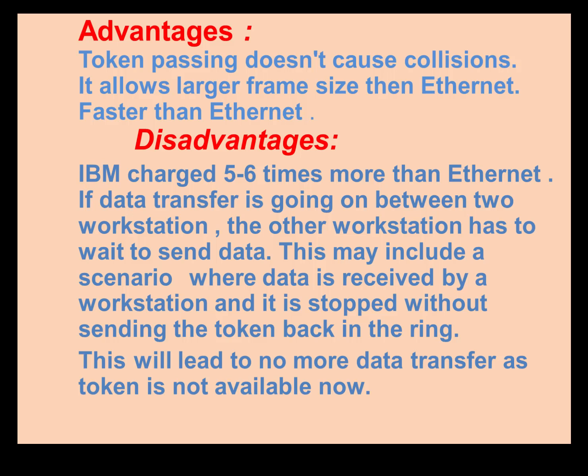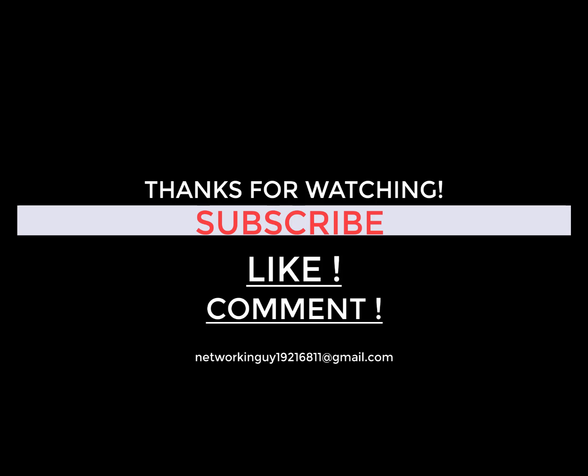Here are some advantages of Token Ring: it does not cause any collision, it allows a larger frame size than Ethernet, and it is also faster than Ethernet. However, it is expensive — IBM charged five to six times more than Ethernet, which was the main reason it failed. Another disadvantage is that if data transmission is ongoing between workstations A and E, and workstation B wants to send data, it will have to wait.